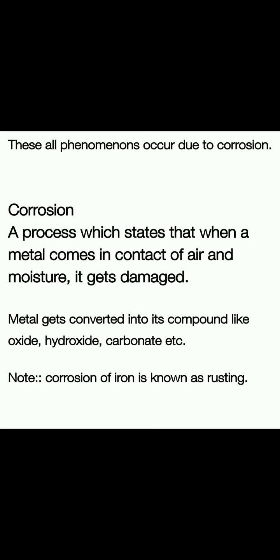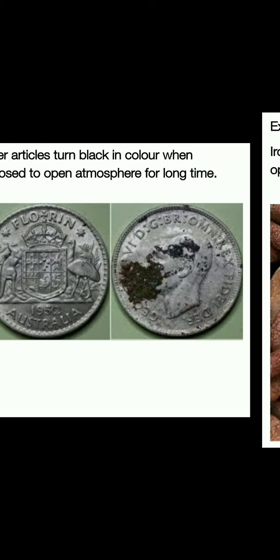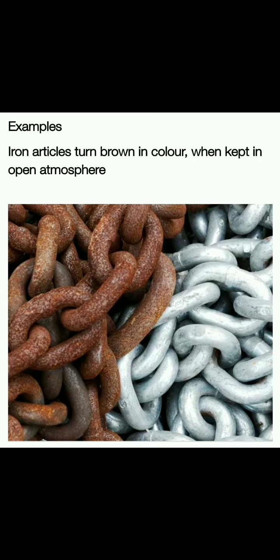We have seen all the examples — these are all cases of corrosion. Now we are talking about why the colors are different. Iron forms its oxide when it comes in contact with air, and that oxide is reddish brown in color. That is why iron's color changes to reddish brown.